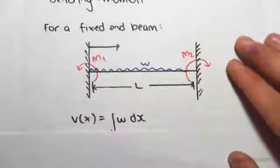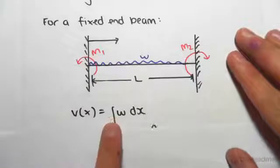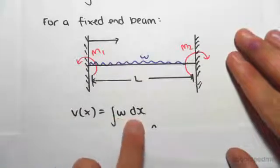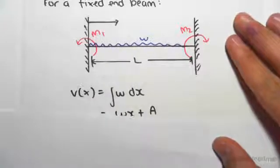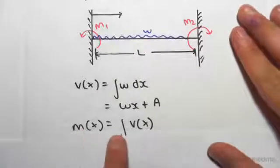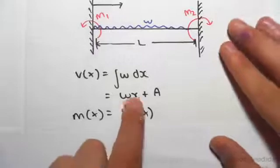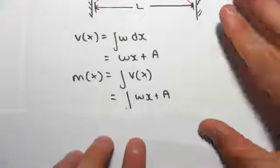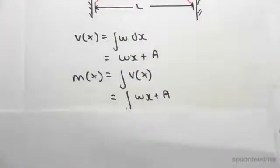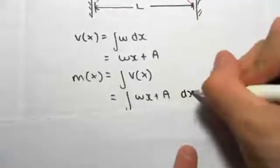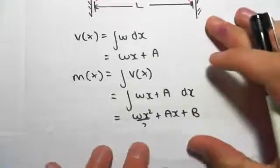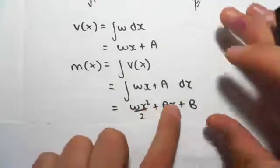We know that the shear is the integral of the UDL over dx, so integrating that we get wx plus A. The moment is the integral of the shear, so integrating for wx plus A dx, we would get wx squared over 2 plus Ax plus B.